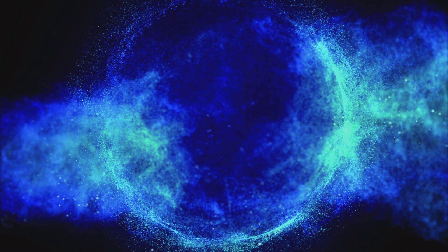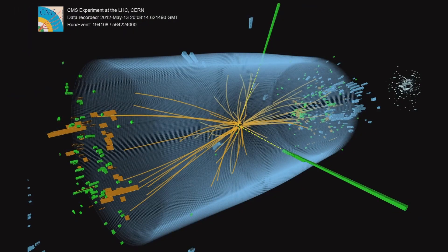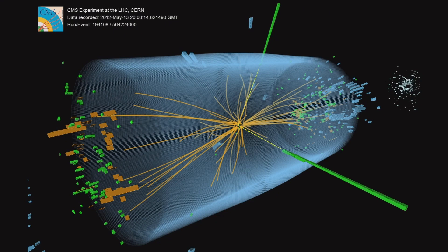CERN also played a key role in the development of the Worldwide LHC Computing Grid, WLCG, which allowed scientists around the world to access and analyze the data generated by the LHC. CERN was also known for its contributions to the World Wide Web, which was developed at the laboratory in 1989 by Tim Berners-Lee. This technology changed the way we communicate and access information and it was all made possible by the brilliant minds at CERN.